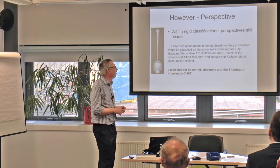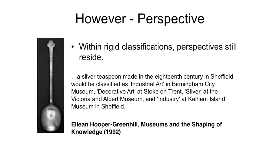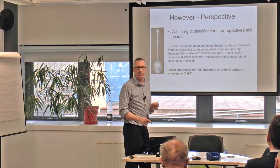Here's an example from a famous museologist: a silver teaspoon made in 18th-century Sheffield will be classified as industrial art in Birmingham City Museum, decorative art at Stoke-on-Trent, silver at the Victoria and Albert Museum, and industry at Kelham Island. The same objects have slightly different perspectives depending on where you're coming from, what your disciplines are, and what your organization is.